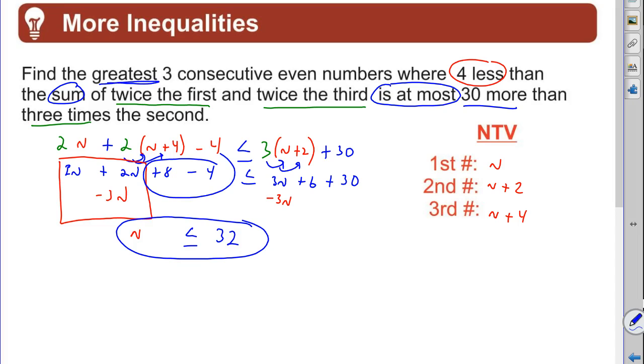Well, one of the greatest numbers. See, N could be two. N could be four. N could be eight and it'll fit the criteria, but we want the greatest numbers. So N is going to be 32. What's the second number? Two more, 34. And what's the third? Two more, 36. Those are the three largest or greatest consecutive even numbers that fit the criteria. Hey, that's the idea.